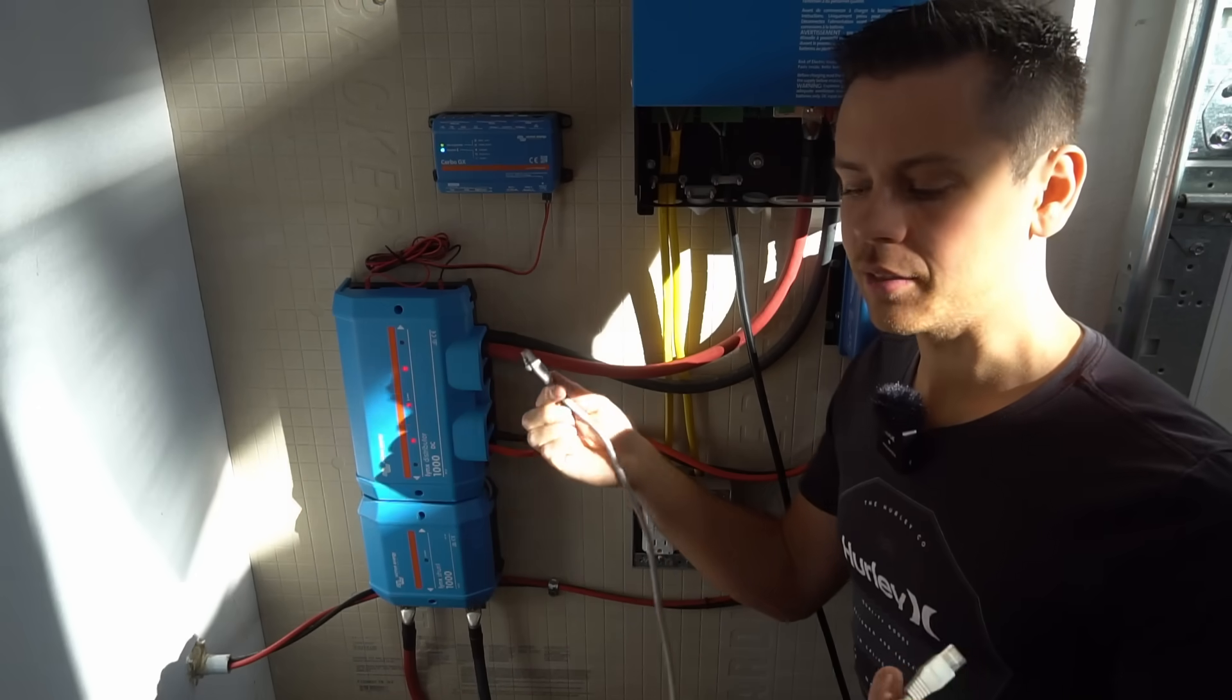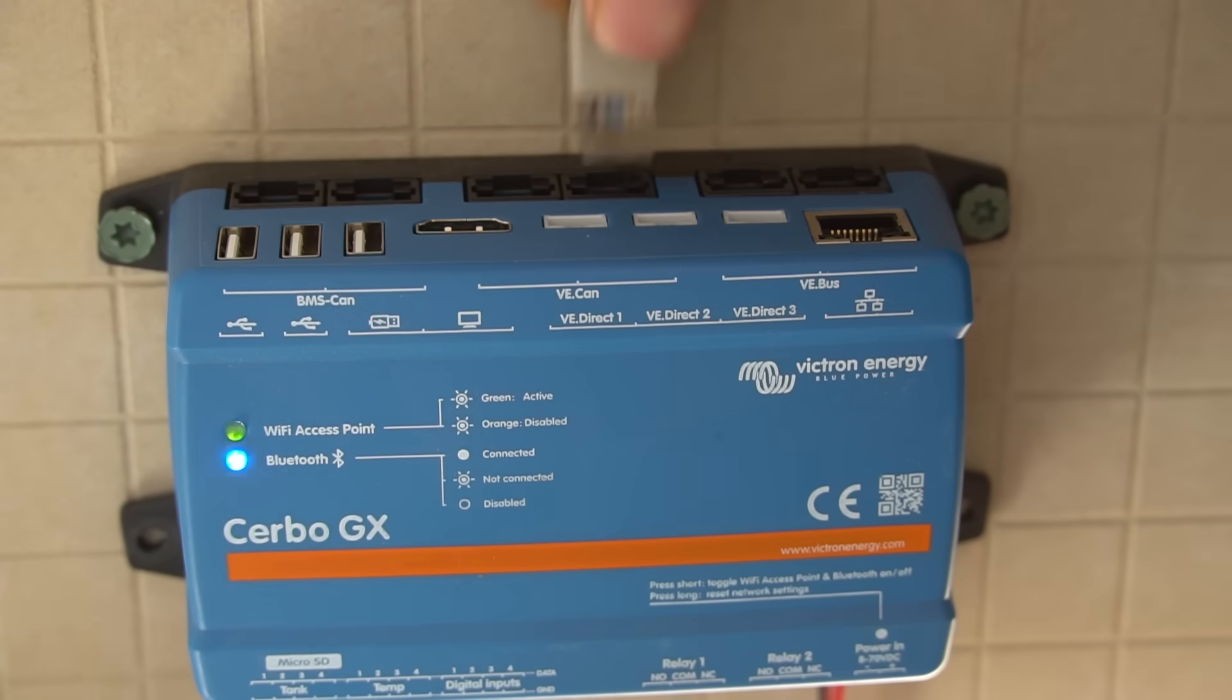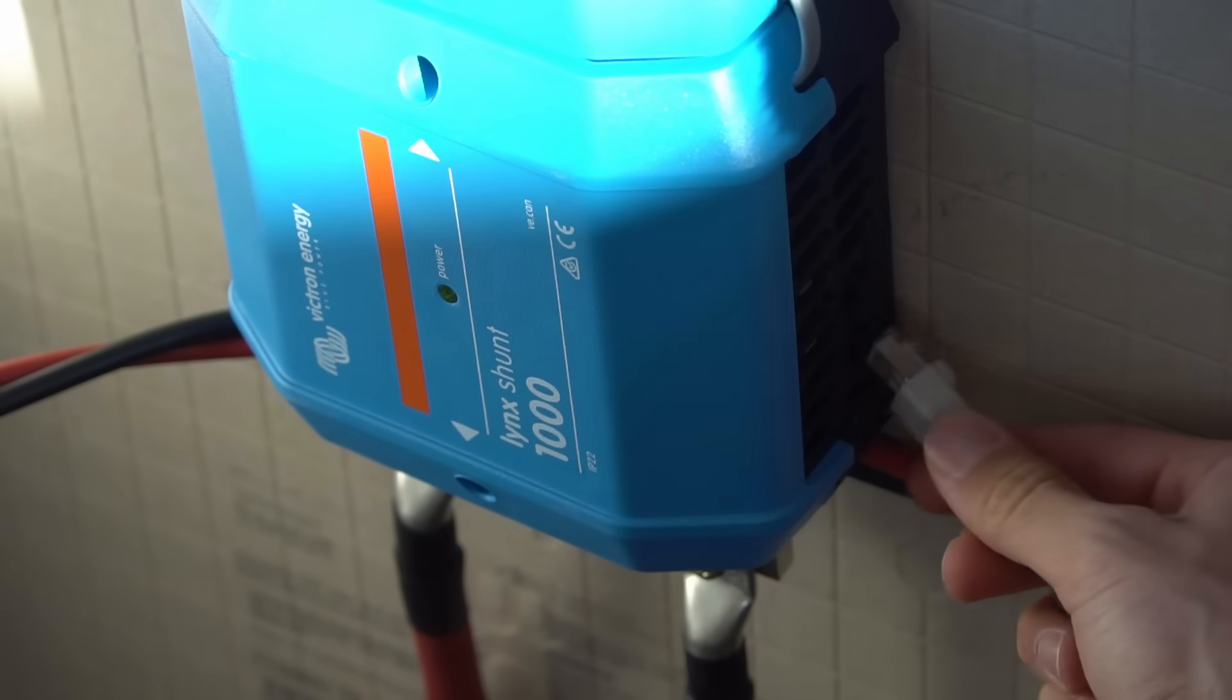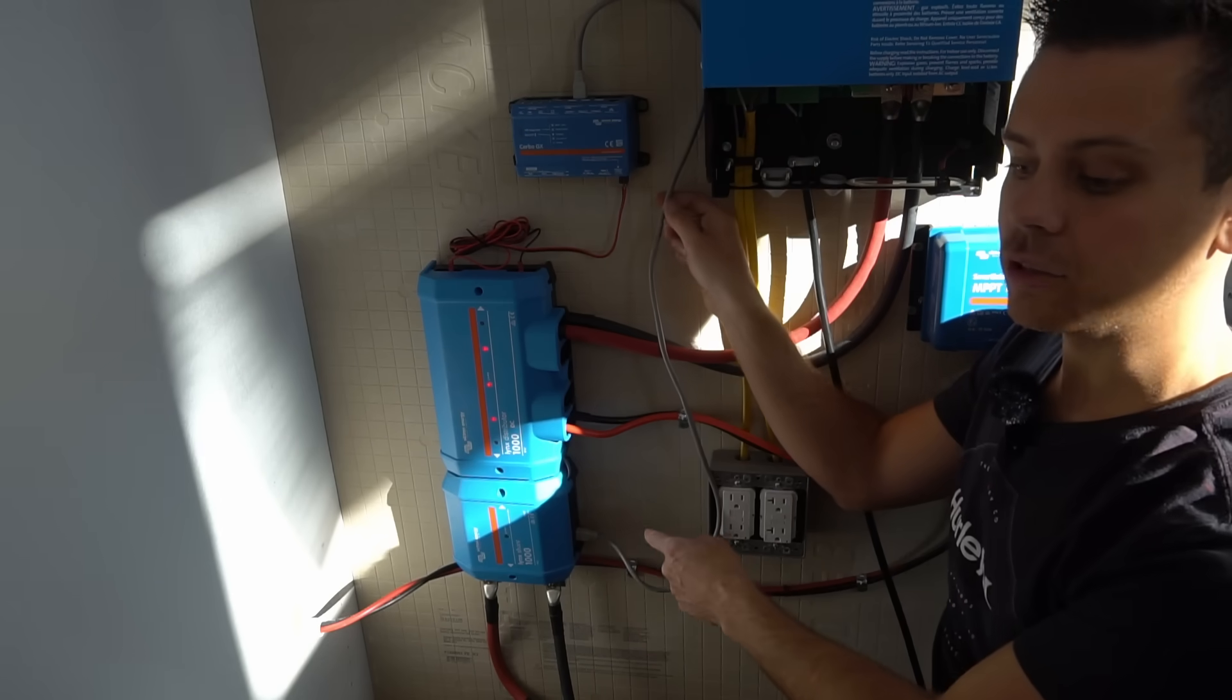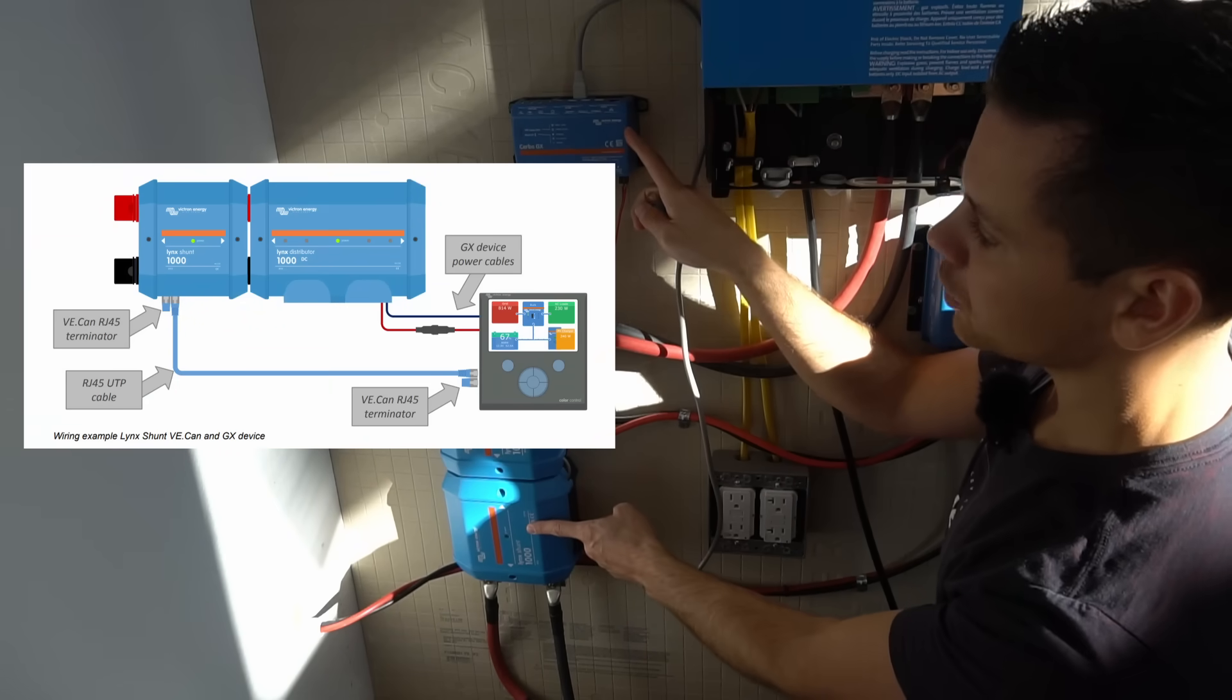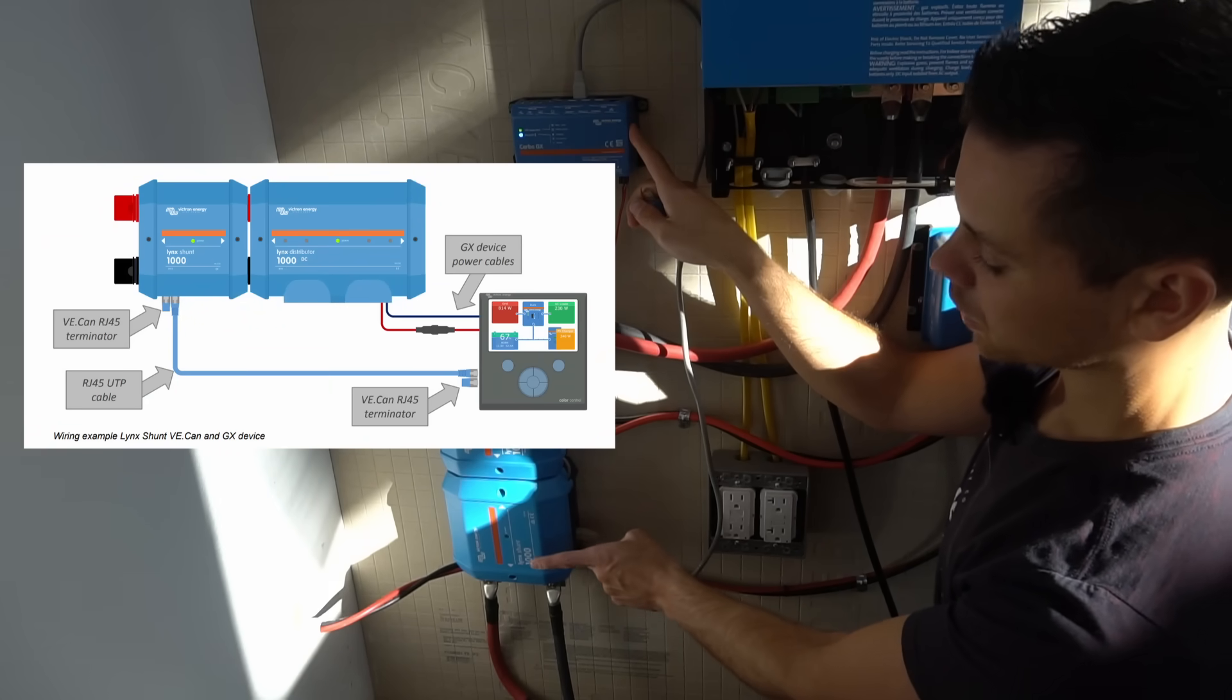So let me show you so it's easier to understand. First you want to connect the devices with an Ethernet cable. And right here it says VE CAN. So we're going to plug the Ethernet cable right there. Now the other end of the cable will plug into the shunt's communication port. Now the cable is connecting these two together, but we need to terminate the ends. Because we only have two devices, this is the first and this is the last.